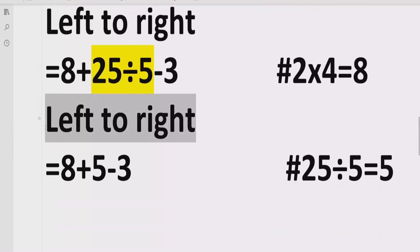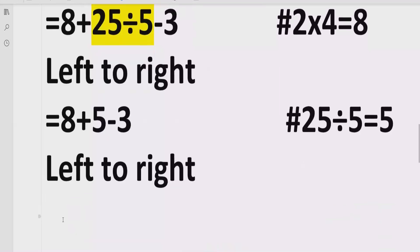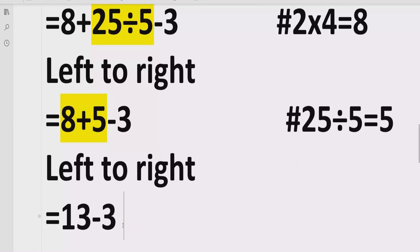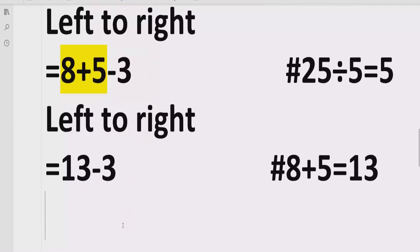Now in step four, we have solved all division and multiplication. We move to addition and subtraction. First we have the addition: 8 plus 5, which equals 13, minus 3. So 8 plus 5 is 13, and now we have two terms subtracting each other. We subtract both and get the answer, which is 10.